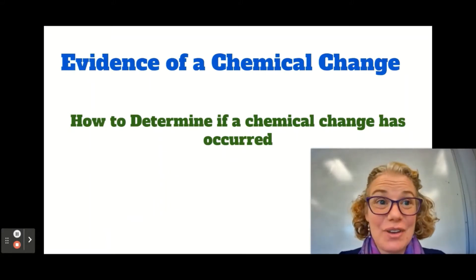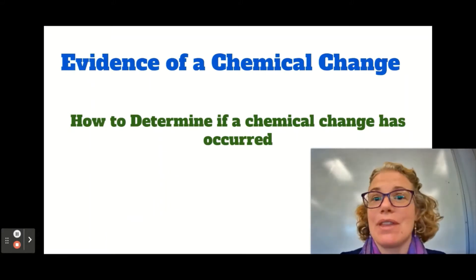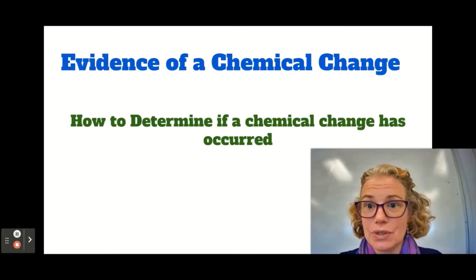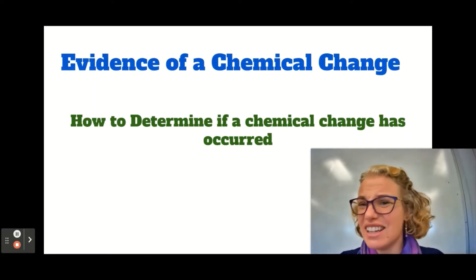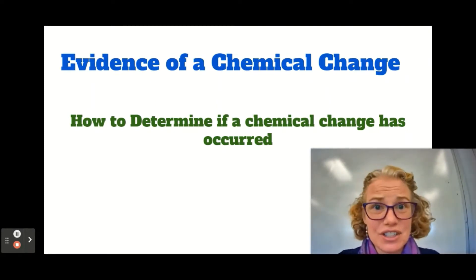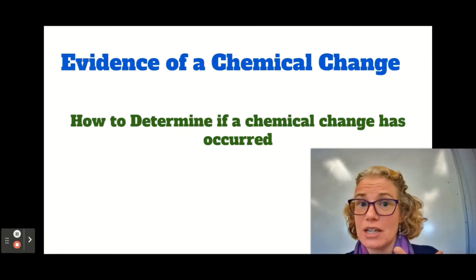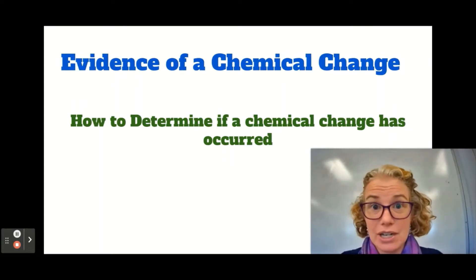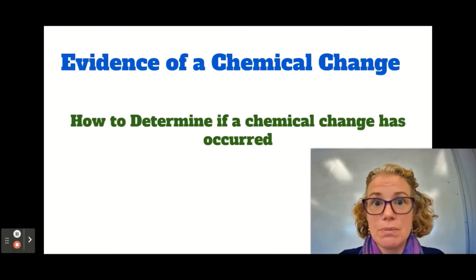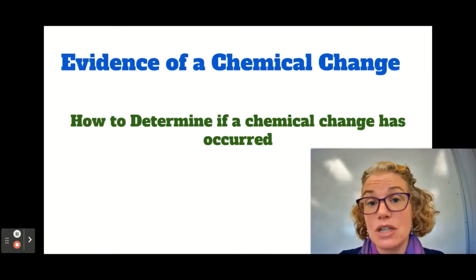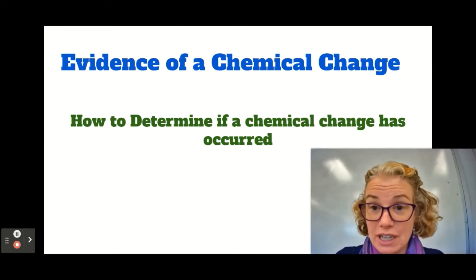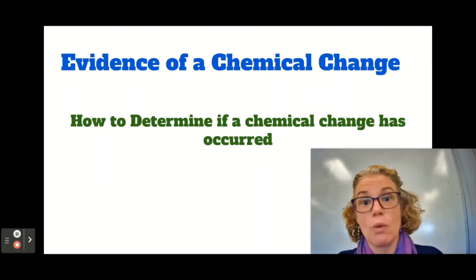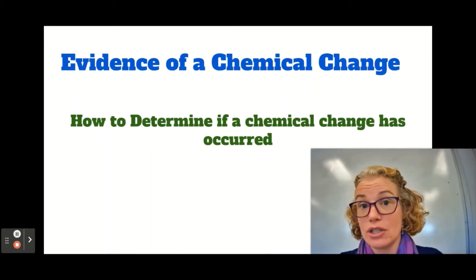Welcome everybody. Today's video is going to be about the evidence that you can use to determine if a chemical change has occurred. So if you're looking at a situation and you're trying to say, is that a physical change or is there a chemical change? Because sometimes there's a gray area in between. There are some particular pieces of evidence that you can use to determine if it's a chemical change, or to justify why you said it was a chemical change.